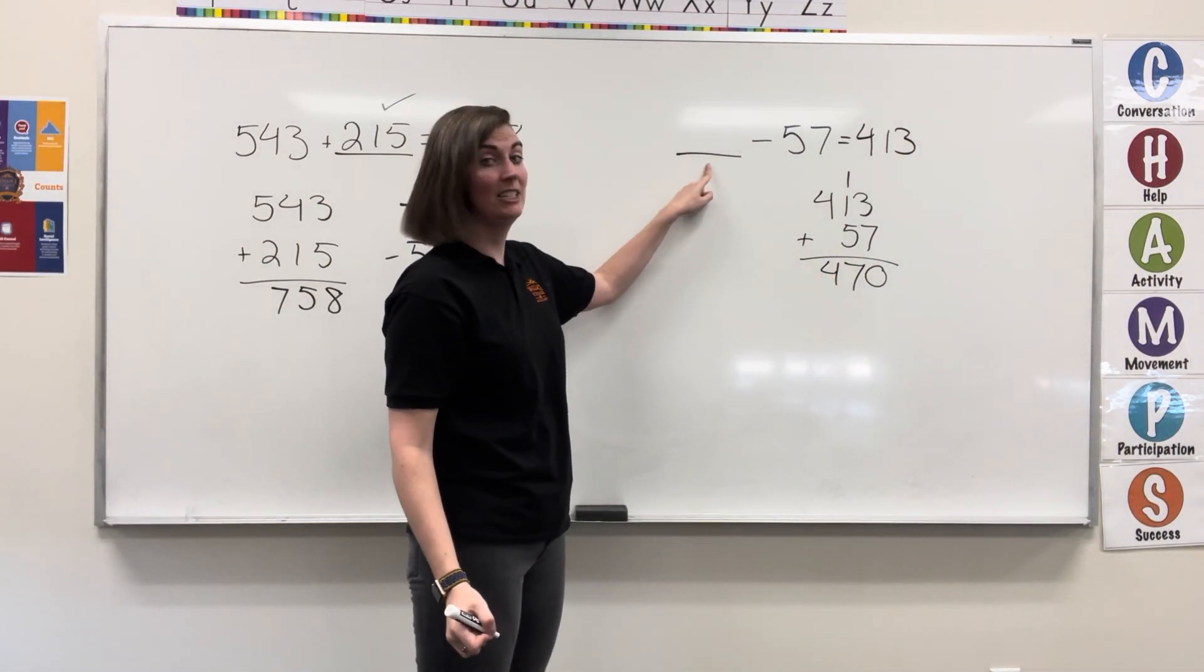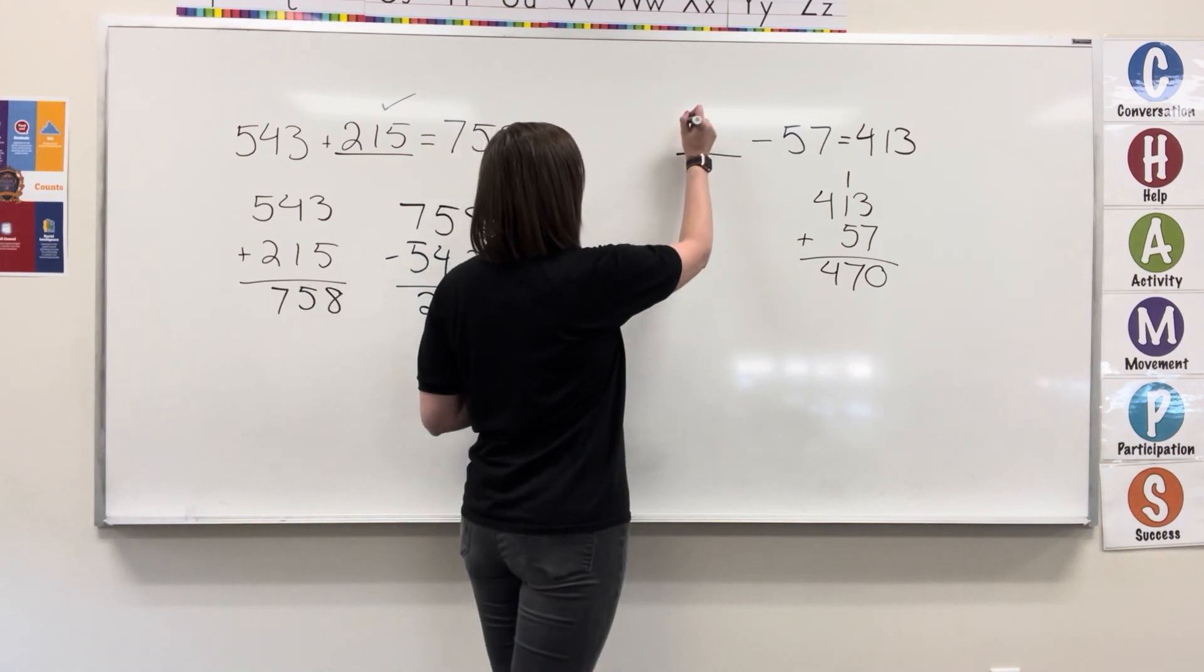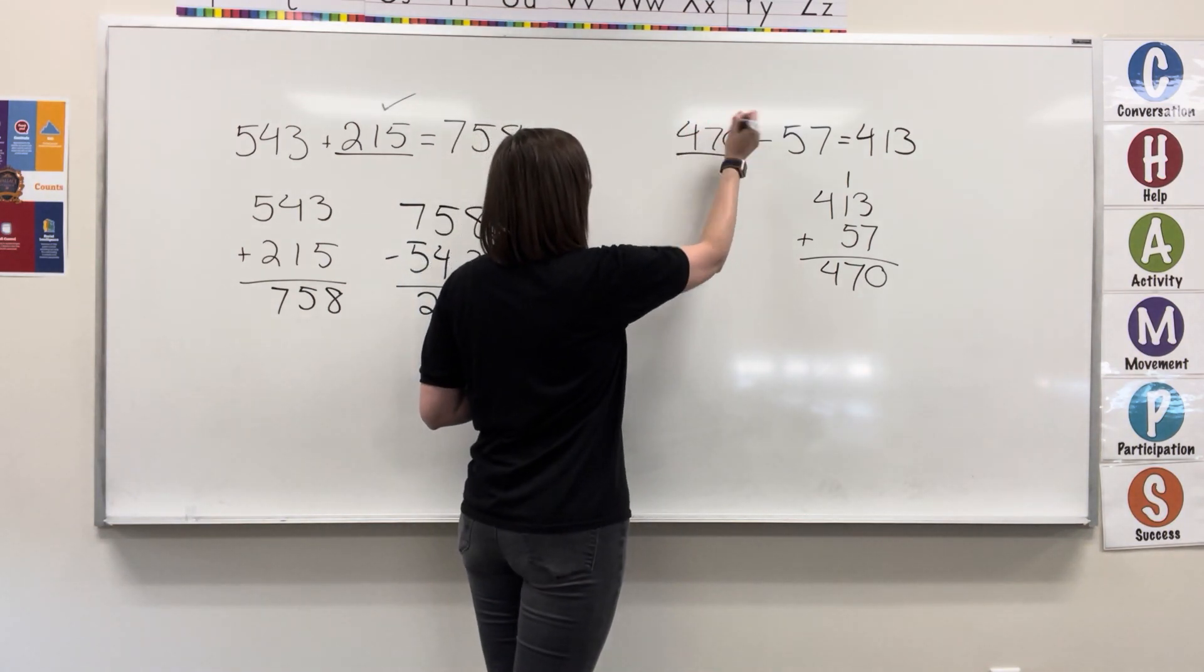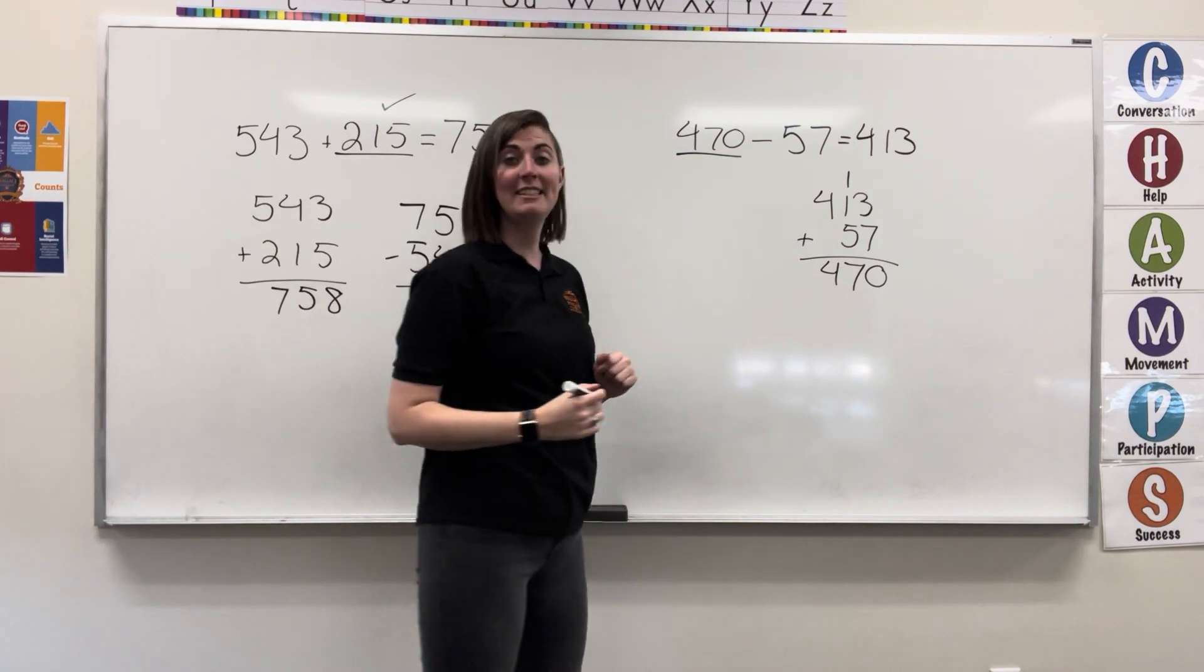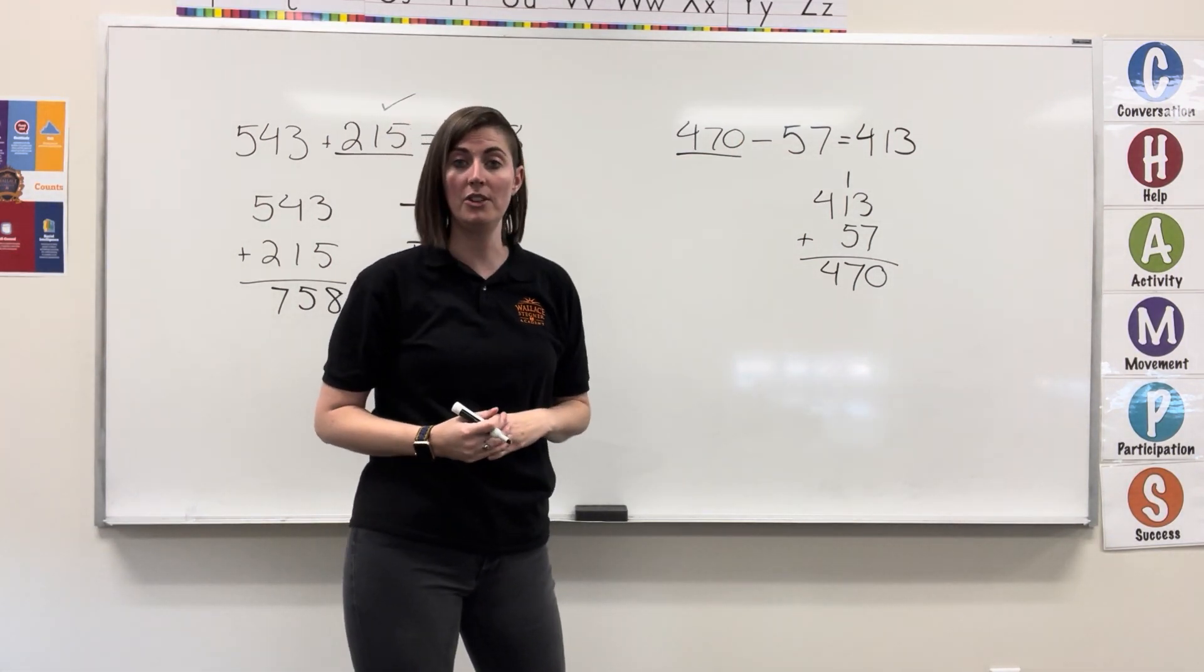Again, we can plug this in to check and see if our math is correct. So we take 470, and now we're going to subtract 57 to find out if we end up with our original difference of 413.